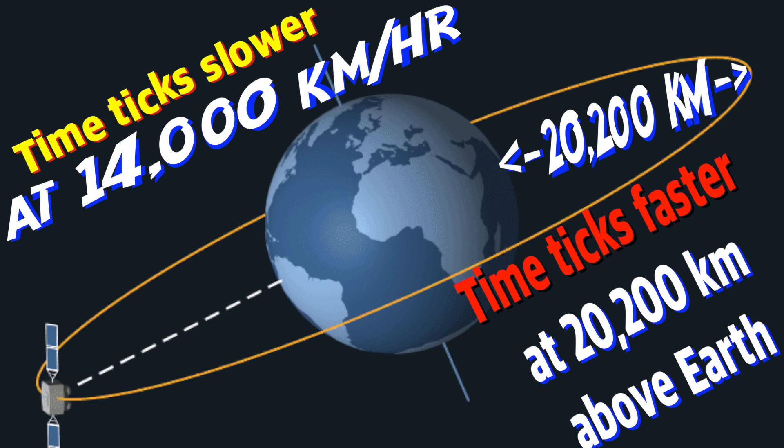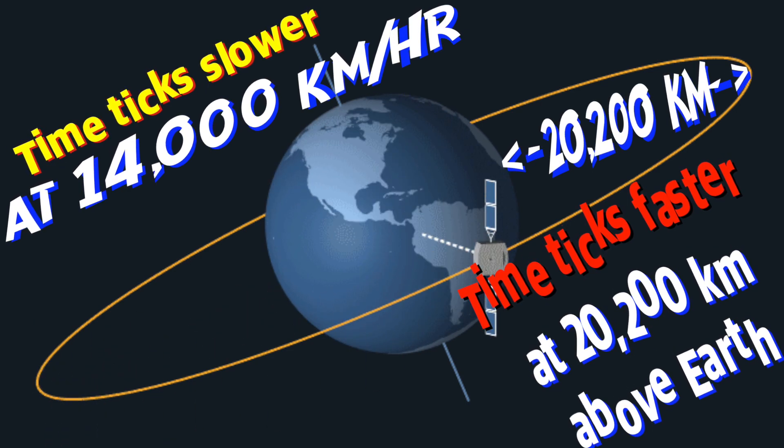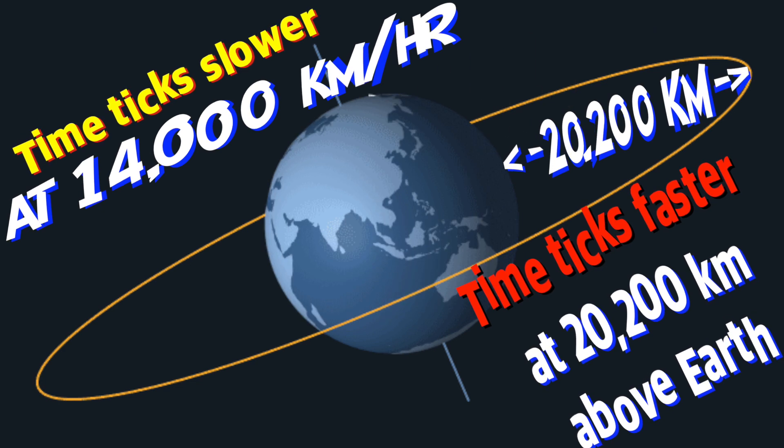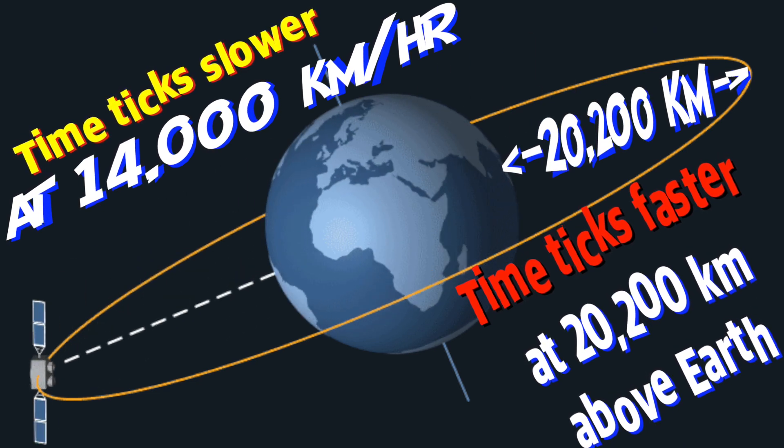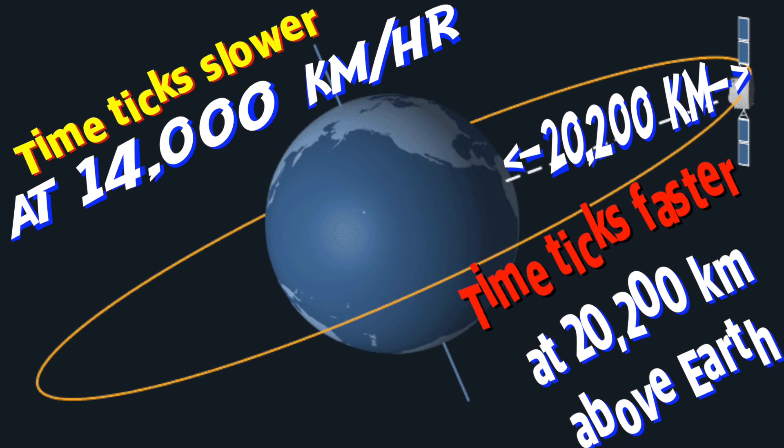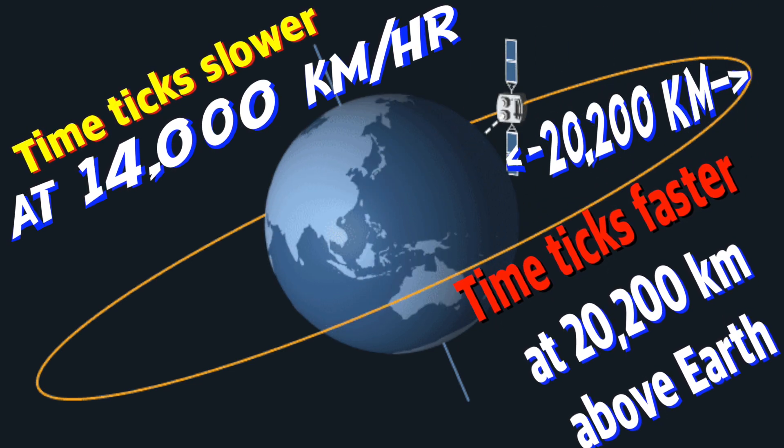As you move away from the sea level up in the sky, in the space, time ticks faster. But the GPS satellite is also moving around the Earth at a very high speed, at the speed of around about 14,000 kilometers per hour. That's a very high speed, and when things speed up, time slows down.